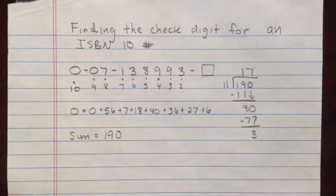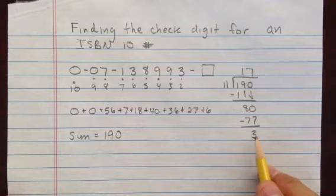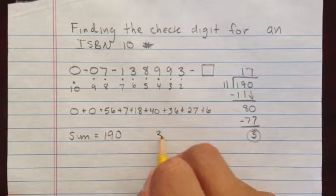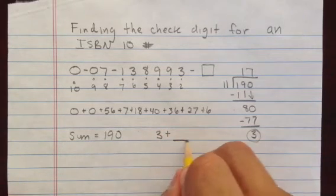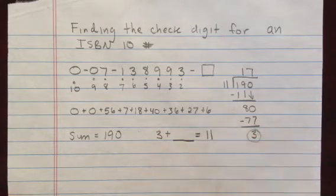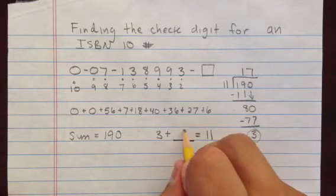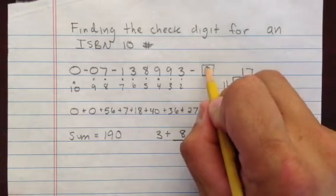Since this is a modulus 11 system, we want this remainder number. When we add something to it, we want that number to equal 11. So take your remainder: 3 plus something has to equal 11. In this case, the only number that fits is 8. And 8 is the check digit.